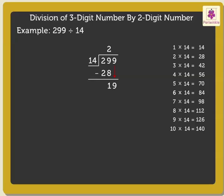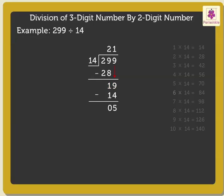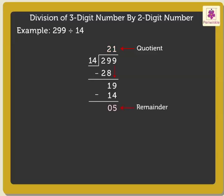Now, we compare 19 and 14. Here, 19 is greater than 14. So, we can divide 19 by 14. Here, the nearest product is 14. So, we write 1 in the quotient above 9 in the ones place and 14 under 19. Next, subtract 14 from 19, which is equal to 5. So, here, we get the quotient 21 and the remainder 5.